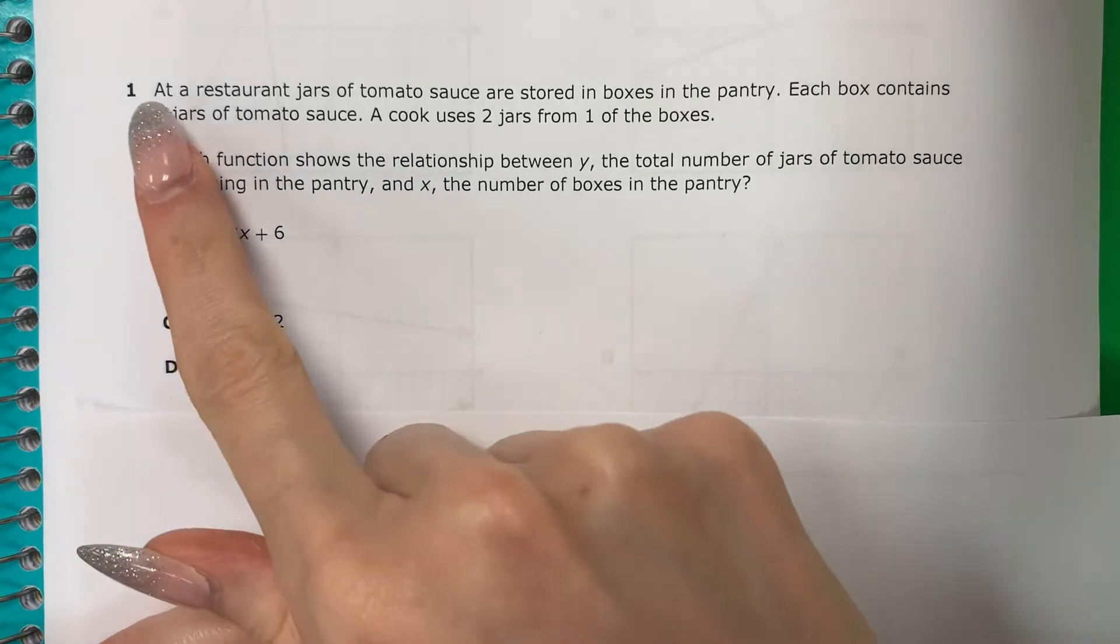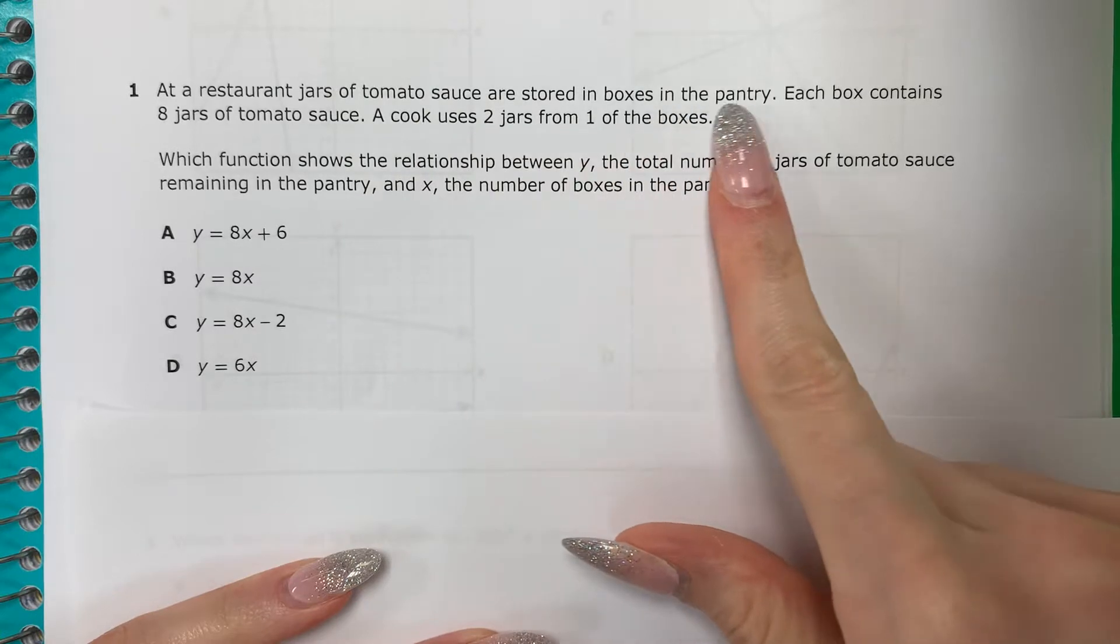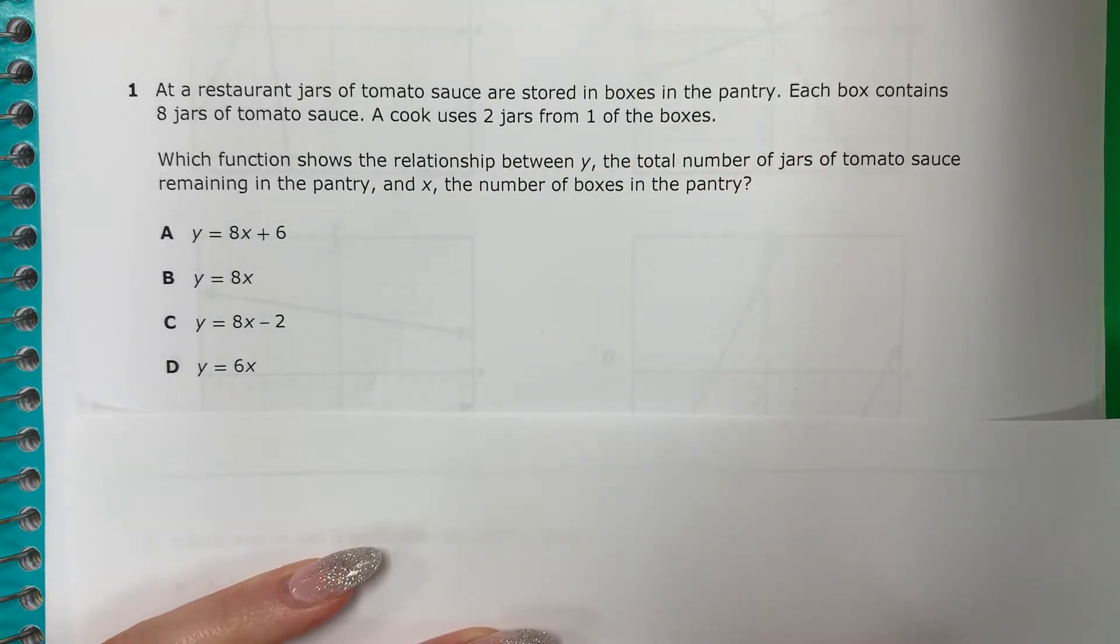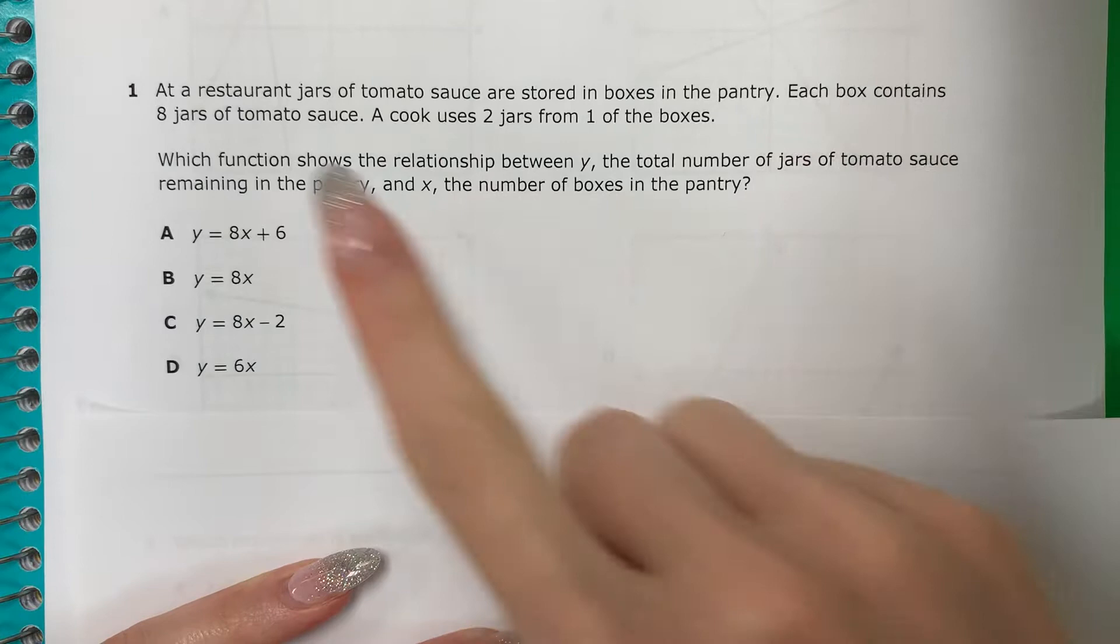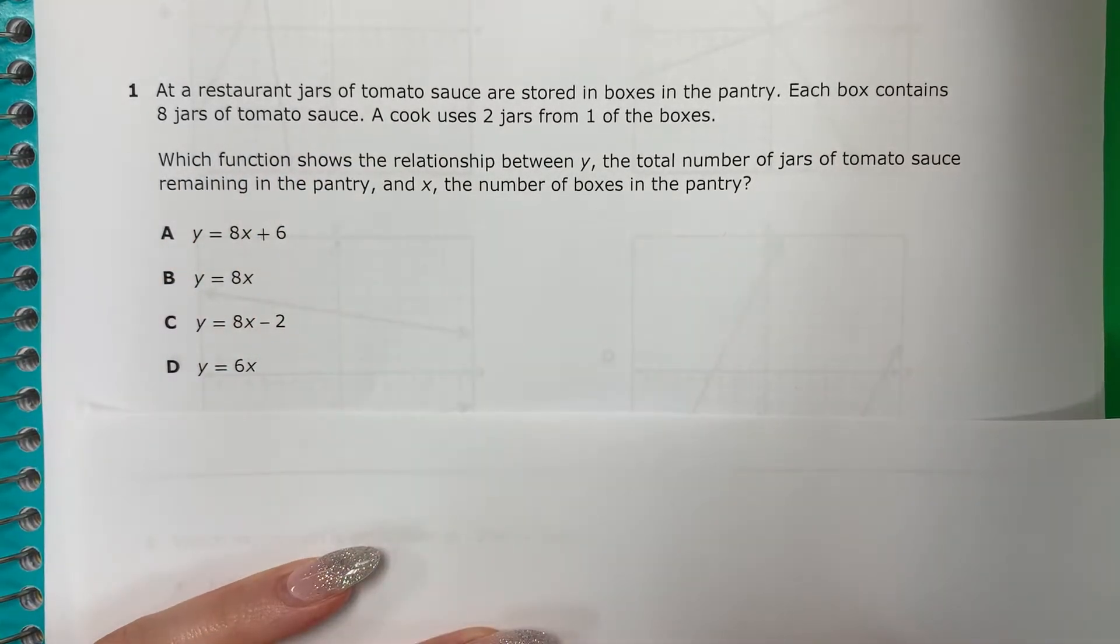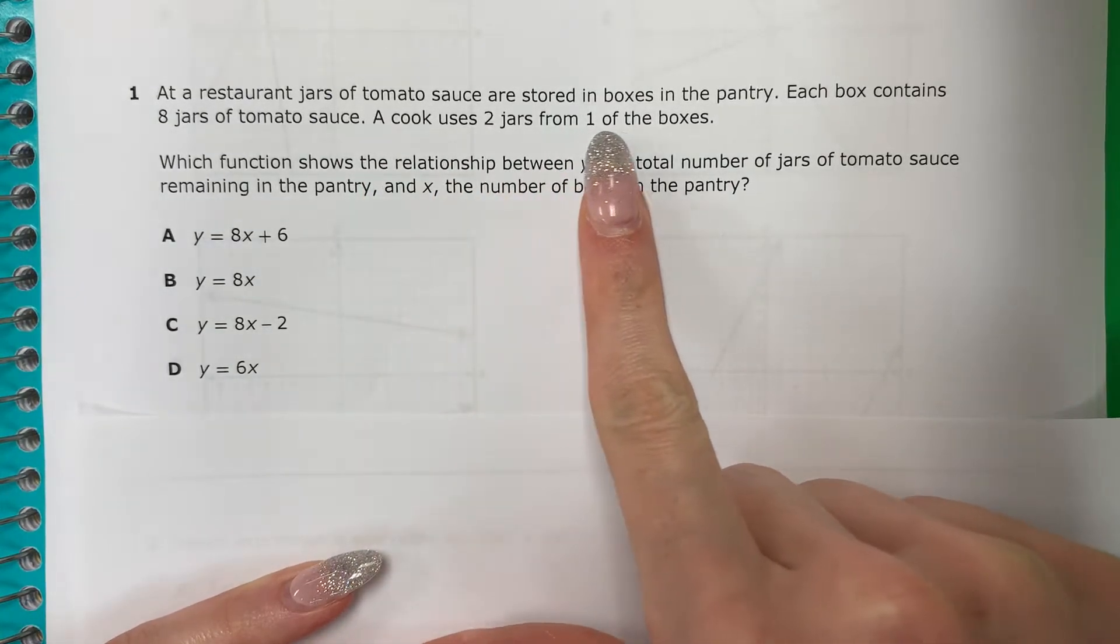Question 1. At a restaurant, jars of tomato sauce are stored in boxes in the pantry. En un restaurante, los frascos de salsa de tomate se almacenan en cajas en la dispensa. Each box contains 8 jars of tomato sauce. Cada caja contiene 8 frascos de salsa de tomate. A cook uses 2 jars from one of the boxes.